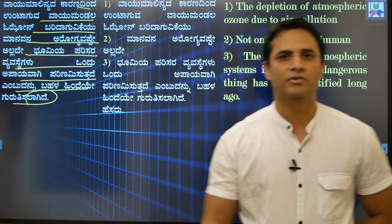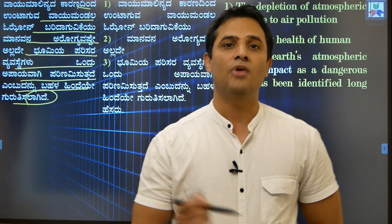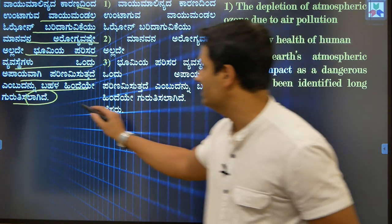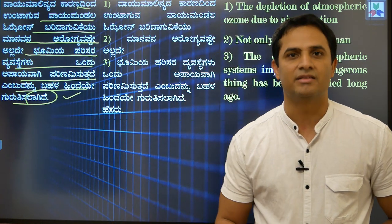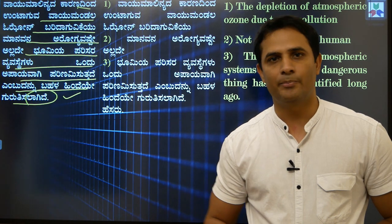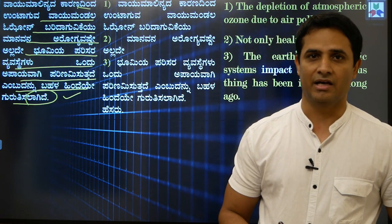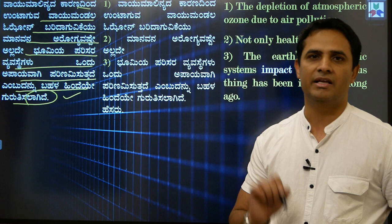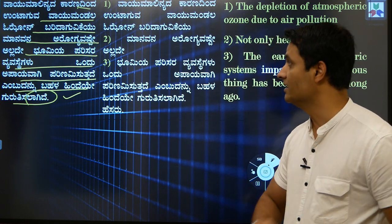First and foremost, we need to identify the tense. 'Guruthisalagide' — it is in present tense. 'Guruthisalagidhu' would be past tense, and 'guruthisalagudhu' would be future tense. So we need to translate this sentence in present tense itself.